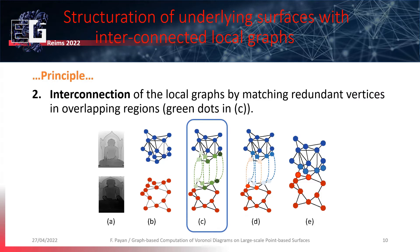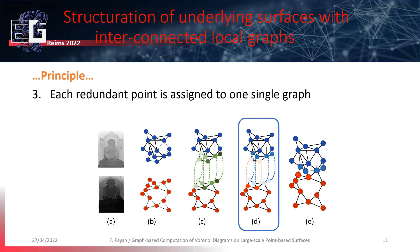Once each graph is created, we have to keep the structure globally consistent, so the local graphs are interconnected by matching the common points in the overlapping regions. Then, to avoid redundant operations in these regions, each pair of matched redundant points is assigned to one graph only.